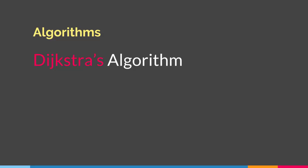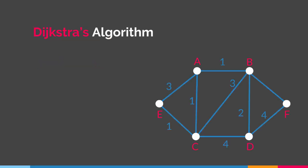We will talk about Dijkstra's algorithm and see how it is used to find the shortest path in a graph. Let's say we have a graph with six vertices, with values assigned to each edge, and we are trying to find the shortest path between E and F using Dijkstra's algorithm. What we do is assign value 0 to our initial vertex and infinity to the rest of the vertices, so E has value 0 and A, C, D, B, and F all have value infinity.